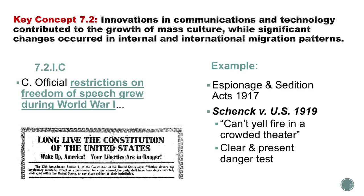Now I bring in key concept 7.2. It says official restrictions on freedom of speech grew during World War I. The United States decided they could not allow Americans to speak out against their government. You get Espionage and Sedition Acts. Espionage involves committing acts of terror or physically stopping things related to government, including spying. Sedition is where you speak out against the government.